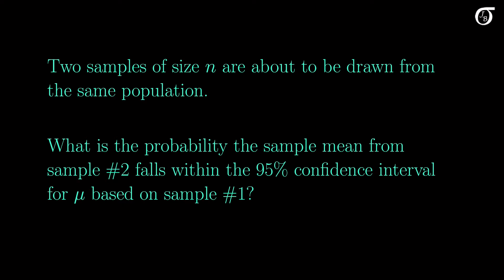My wording on this first slide is a little loose, and the question is not answerable as stated, but I will shore up some of the details a little later. This slide is just to show the gist of the question I address here. If two samples of size n are about to be drawn from the same population, what is the probability that the sample mean from sample number 2 falls within the 95% confidence interval for the population mean that we calculate from the data in sample 1?